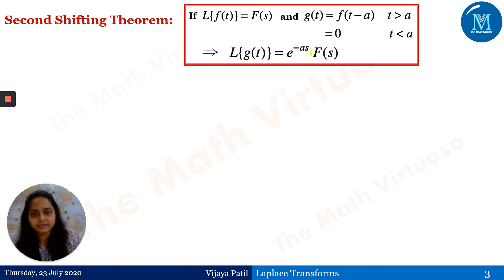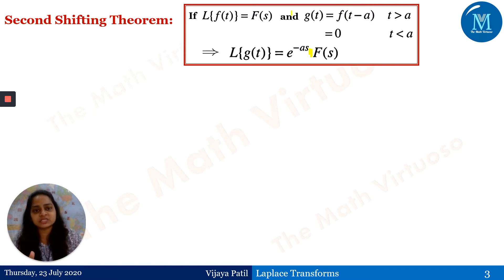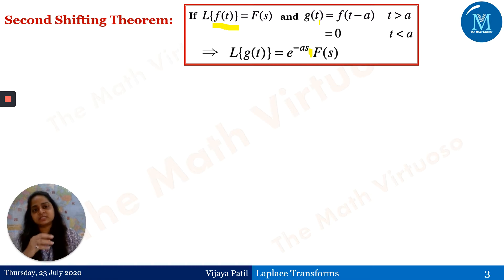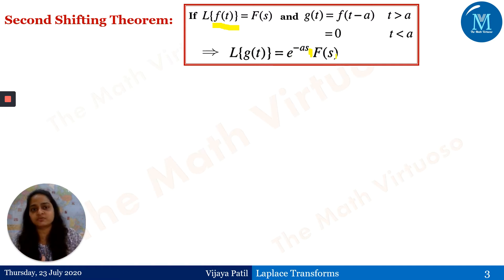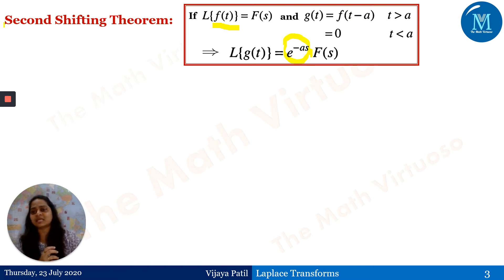So what is the extra term? That means beforehand I need to have the Laplace transform of f(t). So if the Laplace transform of f(t) is F(s), and g(t) is defined with the help of f(t) — since g(t) is nothing but f(t minus a) for t greater than a, and zero otherwise — then the Laplace transform of g(t) equals e to the power minus as into F(s). This is what we write whenever dealing with the Second Shifting Theorem.